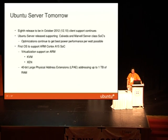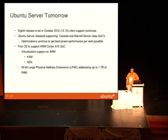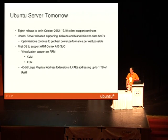On our eighth release and looking to the future, we'll continue supporting Calxeda and Marvell servers, targeting heavy optimizations for best power performance per watt. We will also be the first OS to support the ARM Cortex-A15, which has virtualization, so KVM and Xen support will be there. That's pretty exciting because up till now there has not been hardware support for virtualization in ARM. The A15 will be the first chip that has that. There's also a large physical address space for up to a terabyte of RAM in the A15 chip and we'll have support for that.